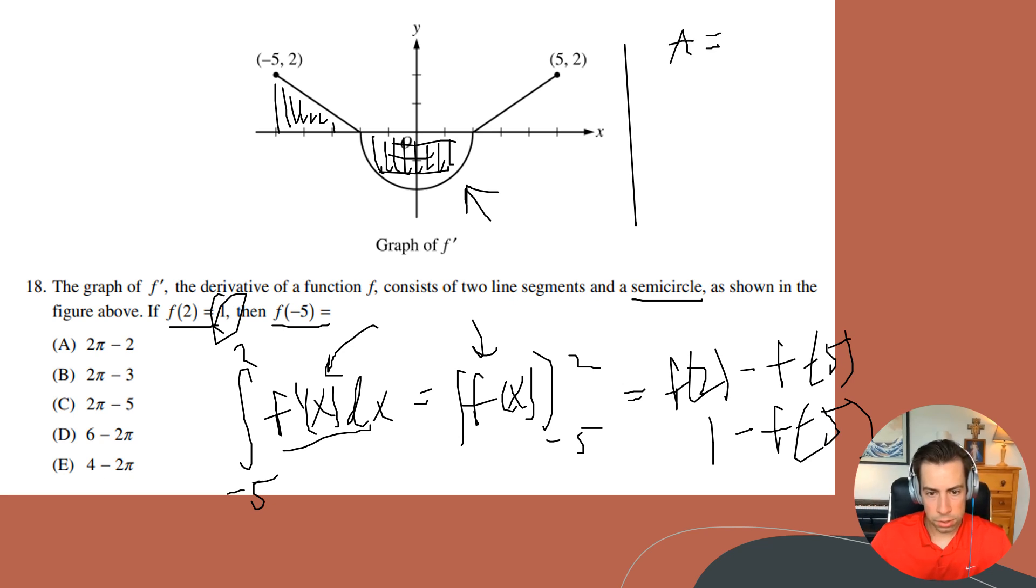the area for the semicircle is just going to be one-half the area of a circle, so it's going to be one-half π r squared. And then I know that the radius is two, so it'll be one-half π times four because two squared is four. And then if I divide four by two, I'm going to get two π. And then remember, this area needs to be negative